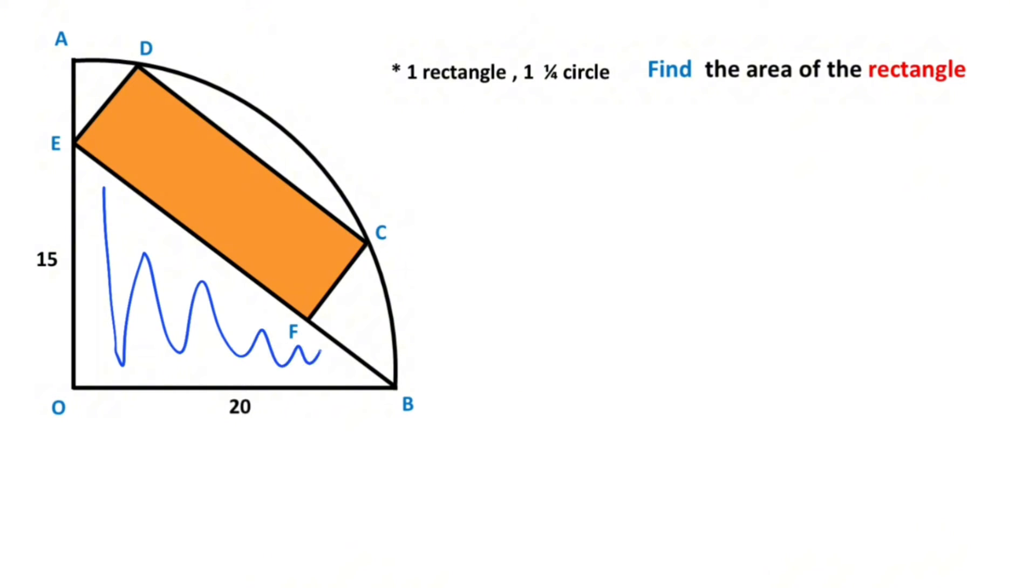First step: for this triangle, if you apply Pythagorean theorem, we get the value of the length of EB. So 15 squared plus 20 squared equals EB squared.